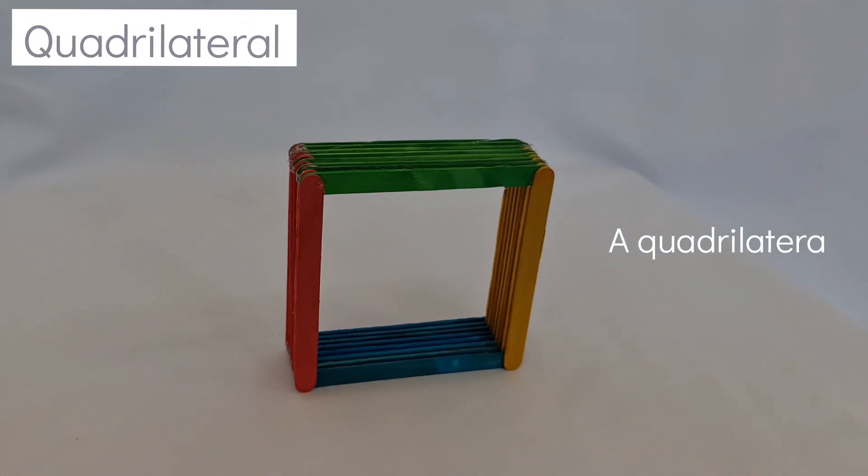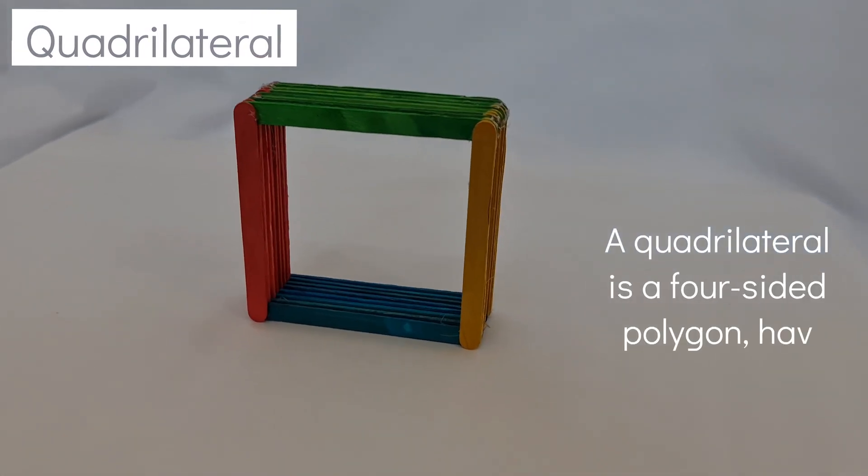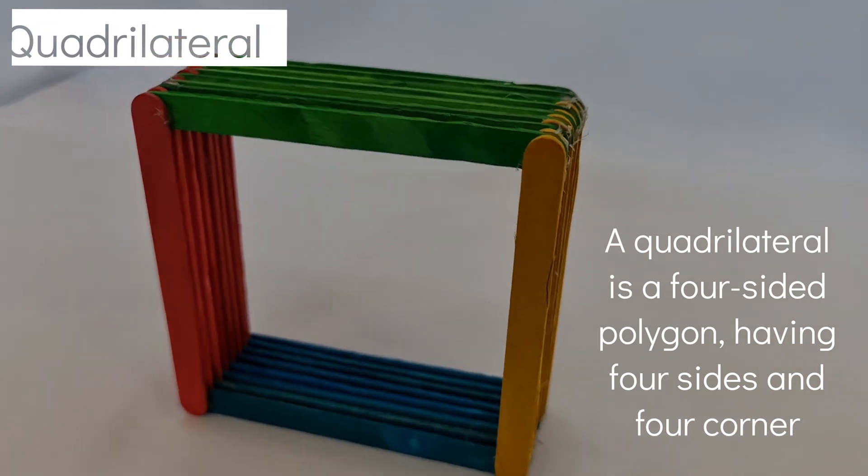Quadrilateral. A quadrilateral is a four-sided polygon having four sides and four corners.